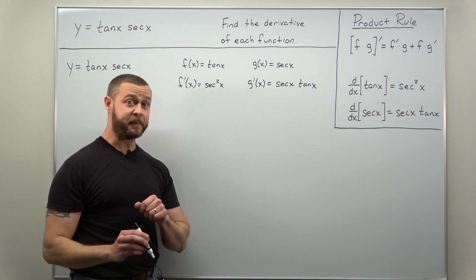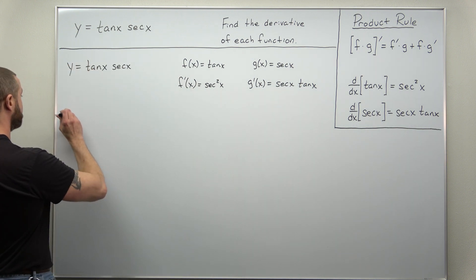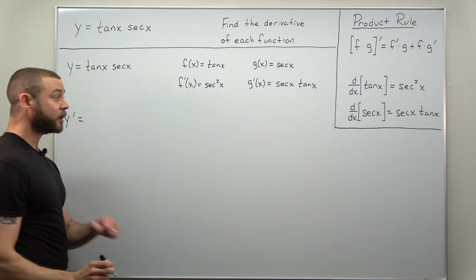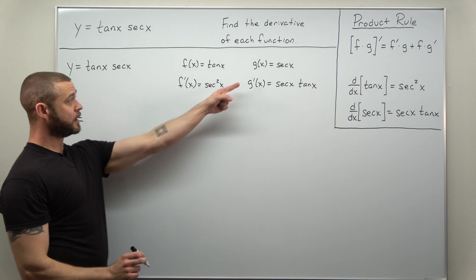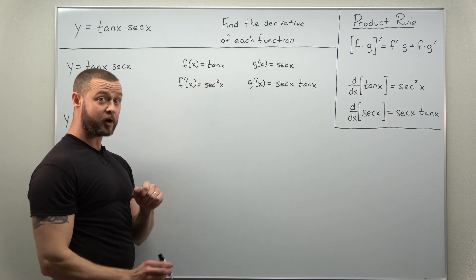We have to put the pieces back together with the product rule as usual. So we're going to get y prime, and the product rule comes out to be f prime times g. I'm going to write this all out with all the four different parts there.